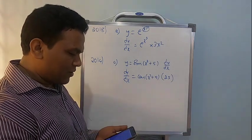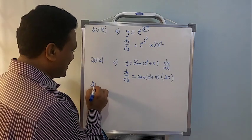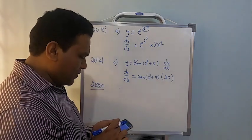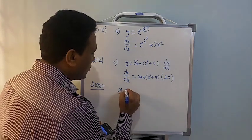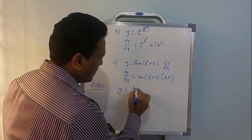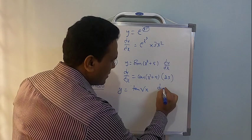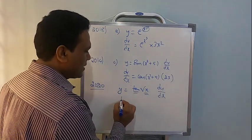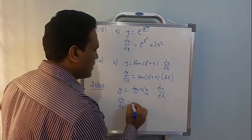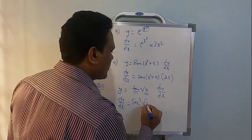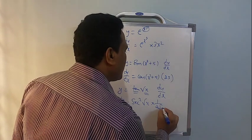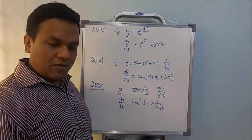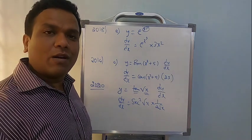For the 2020 academic year, the problem given was: if y = tan(√x), find dy/dx. First for tan, then for √x. dy/dx = sec²(√x) × (1/2√x). That is how one-mark problems appear — always based on chain rule.